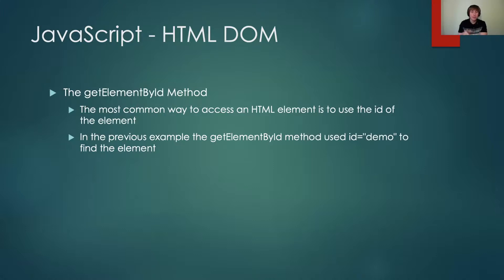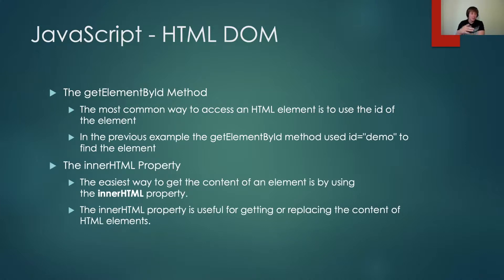In the previous example, we used the getElementById method, which is used to find ID equal to demo in the HTML DOM. So I'm using getElementById — which is a method — to find the element where ID is equal to demo. The innerHTML is a property. It's the easiest way to get the content of an element, and it's also used to set or replace the content of an element. I can use the innerHTML property to get or replace the content of HTML. So these are all DOM methods and properties.